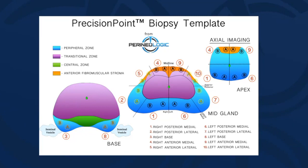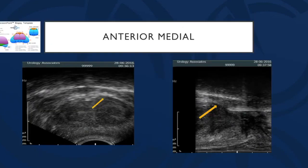If you do not have an MRI and you follow this template, you should achieve a cancer detection rate of around 70%, with more than 50% being clinically significant. The next series of slides shows what each biopsy sector should look like on sagittal and axial images. This is the anterior medial sector — on the transverse ultrasound image the flash is at the 12 o'clock position.